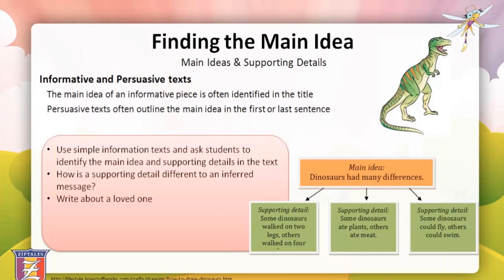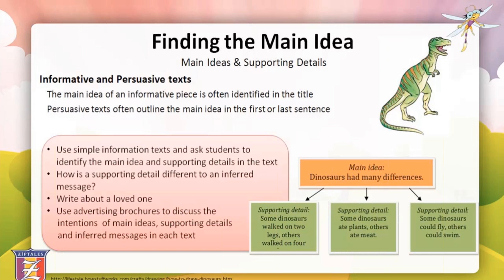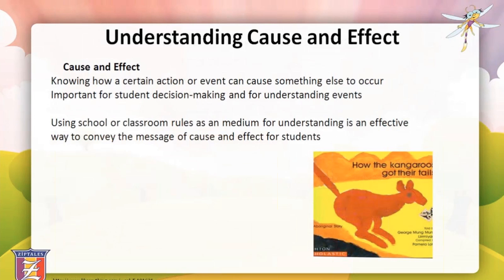You could discuss how supporting details are explicit for the reader, whereas inferred meanings require the reader to gather their own ideas and read between the lines. Another example could be to ask students to write about someone they admire, starting with the main idea in the title — for example, a person's name and saying they're a great singer, parent, teacher, or footballer — then describe why using supporting details. For persuasive text, use a selection of brochures from local attractions and get students to identify the main idea the information is trying to convey — for example, come to this bowling alley and have lots of fun, or play tennis with us to help you get fit.